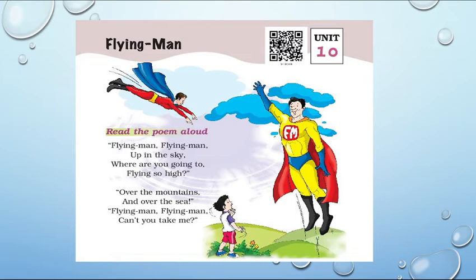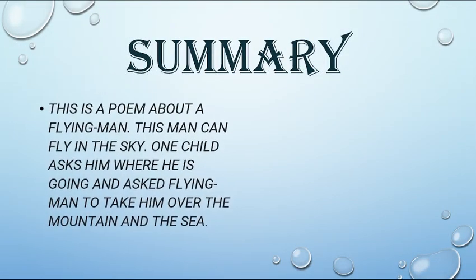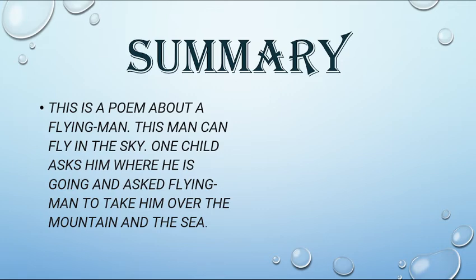Now let's look at the summary of the poem. This is a poem about a flying man. This man can fly in the sky. One child asked him where he is going, and asked the flying man to take him over the mountains and the sea.